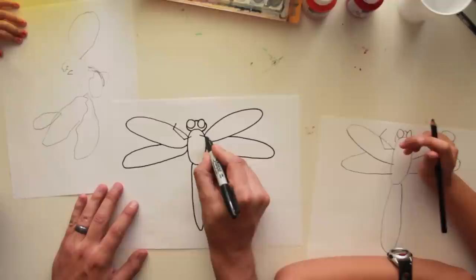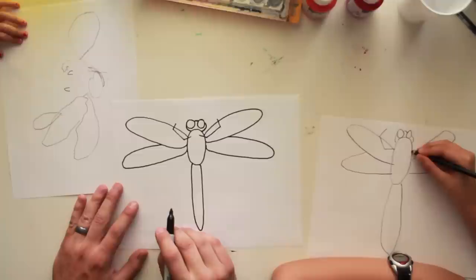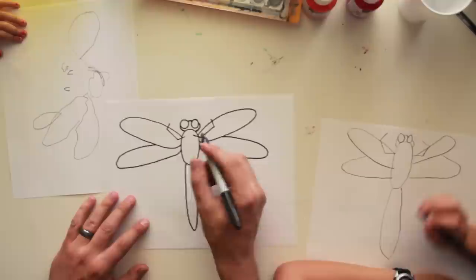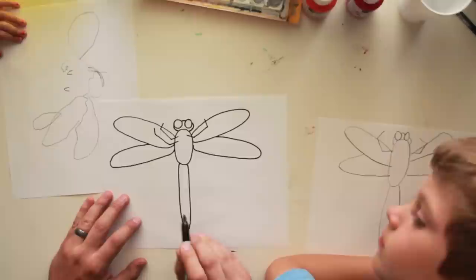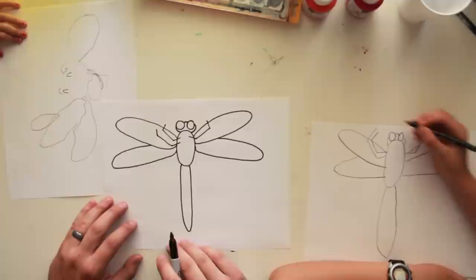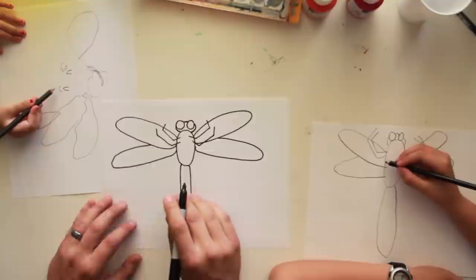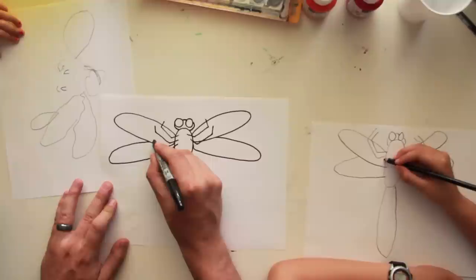And then we're going to draw the other side just like that one. Good. One more bend. Awesome, Chuck. Okay, and then he has another leg like that. Perfect. And then the other side too. Good job, Ed. And then one more on each side.